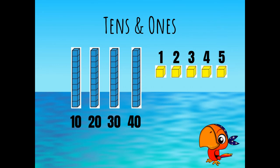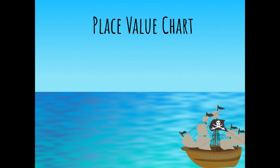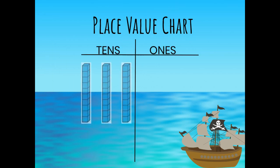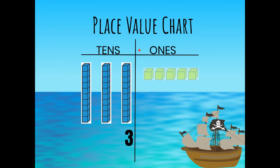Now let's put it all together. We start with our place value chart and then we place our tens in the tens column. Here I've placed three groups of ten, so we would count those as 10, 20, 30. When we write it, we write it as three groups of ten. And I have placed five ones in the ones column, and we write that as a five. So here we have made the number 35.